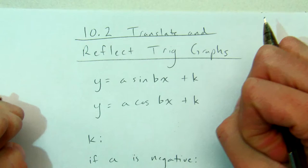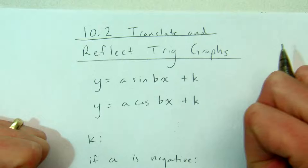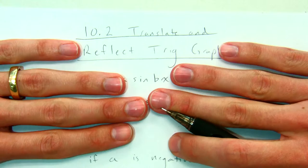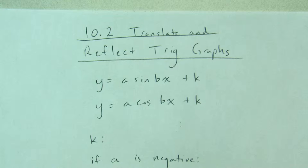Translating a trig graph means taking that graph and shifting it around the coordinate plane. So maybe it moves up or down. Those are the only ones we're going to do. Or maybe it moves left and right, which you'll do some of that next year. Reflecting means taking your trig graph and flipping it over and seeing a mirror image. And we'll see what that looks like on our calculator.